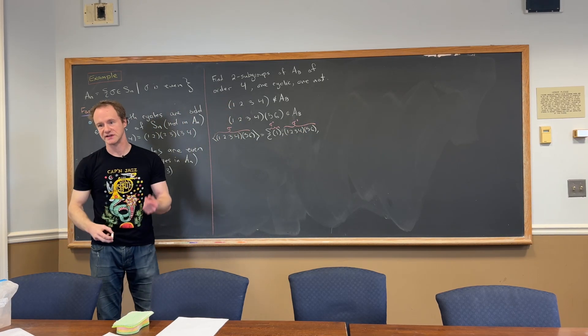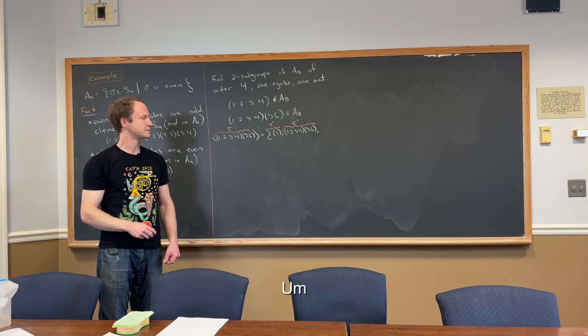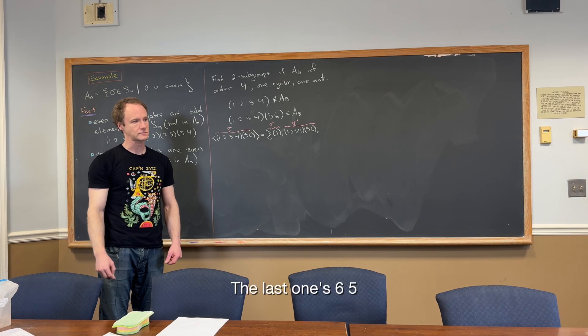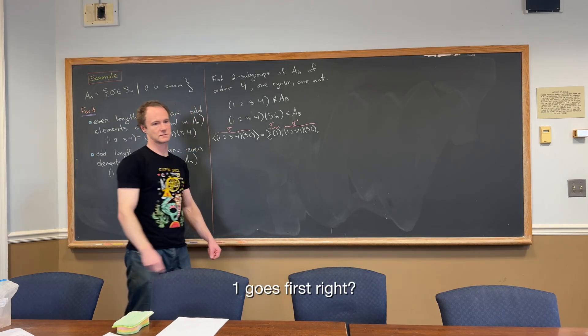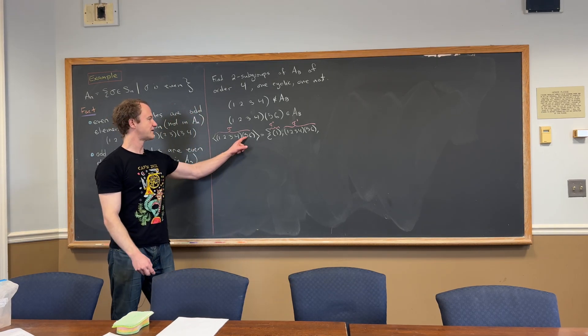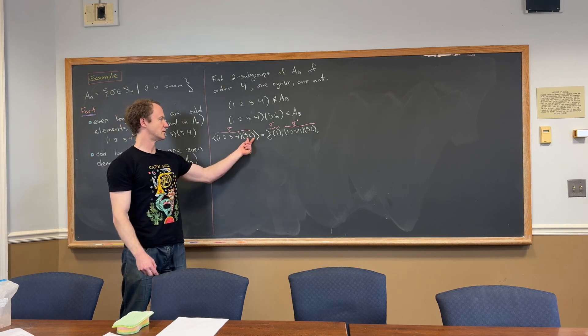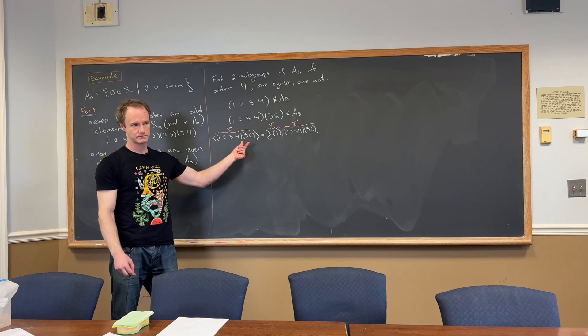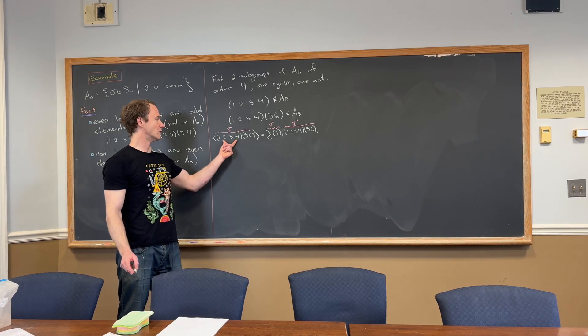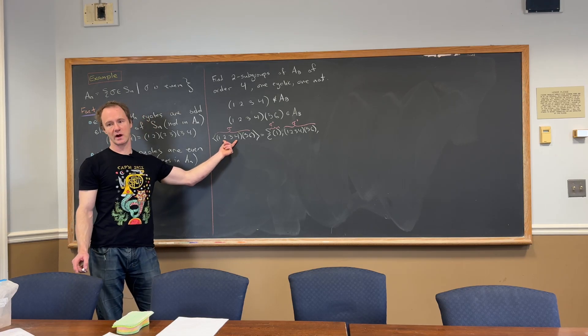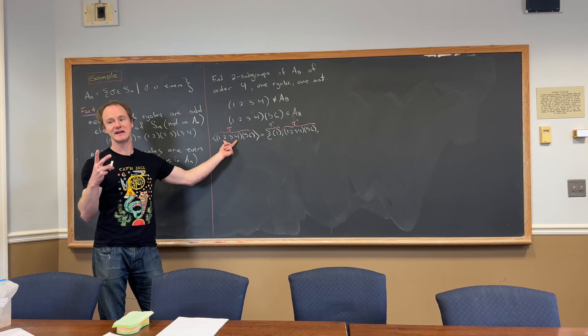And then the next one will be sigma squared. And the last one will be sigma cubed. So what's sigma squared? So the (5,6) is going to disappear when you square it. Because when you compose (5,6) with itself, that's gone. That turns into the identity. So all we have to do is really square this. But we square a cycle by counting through two at a time.